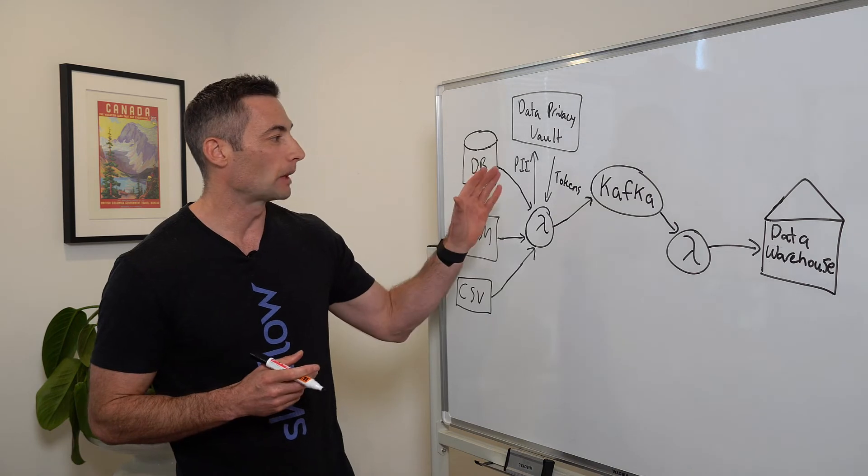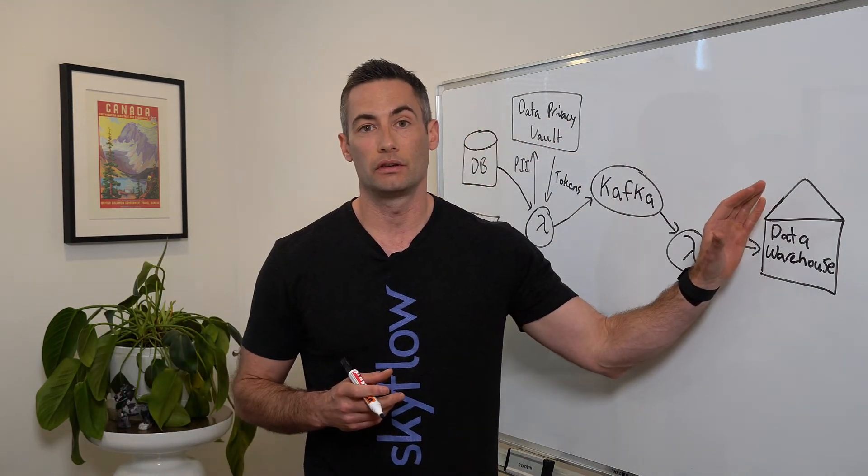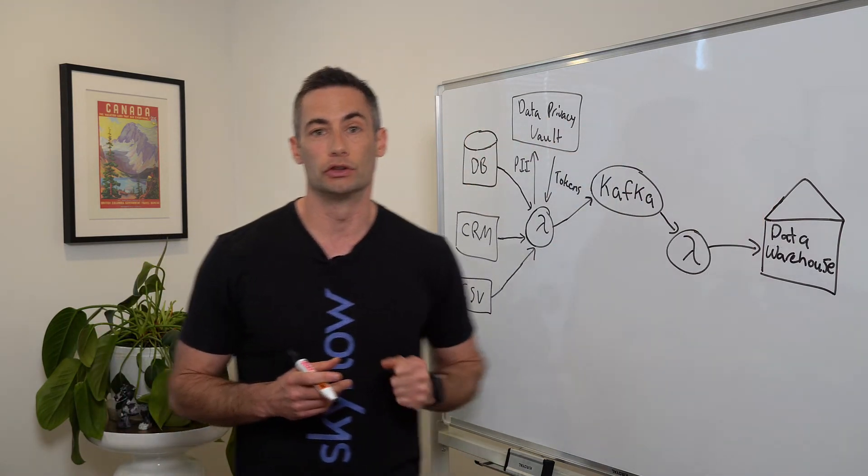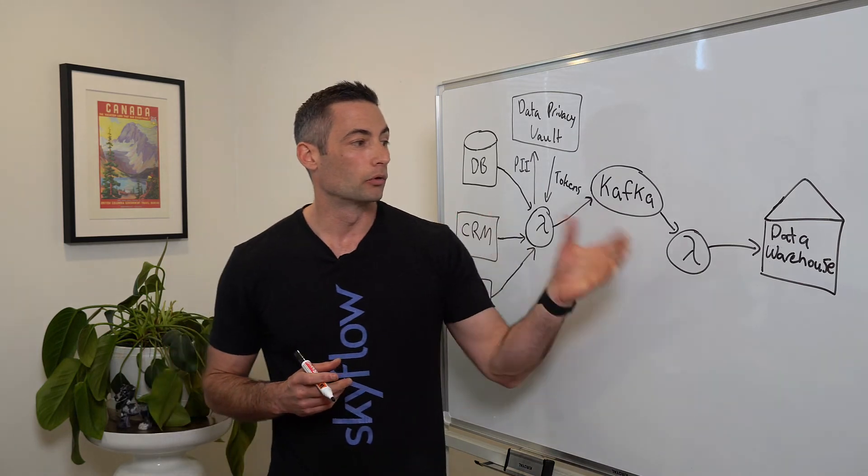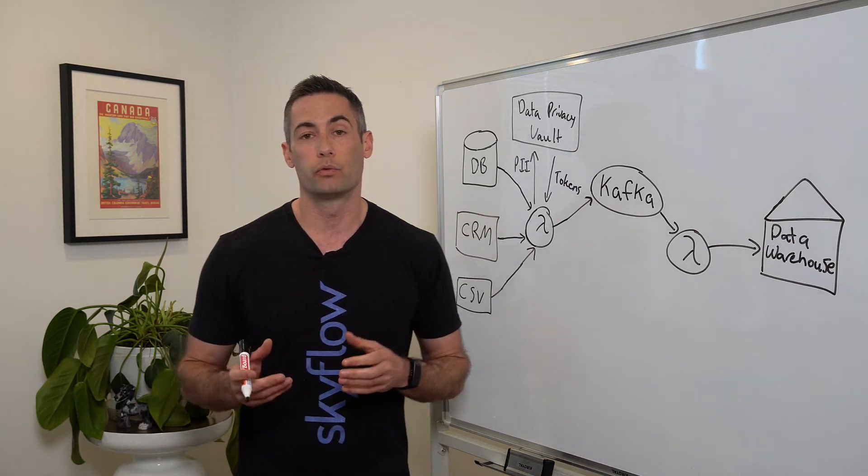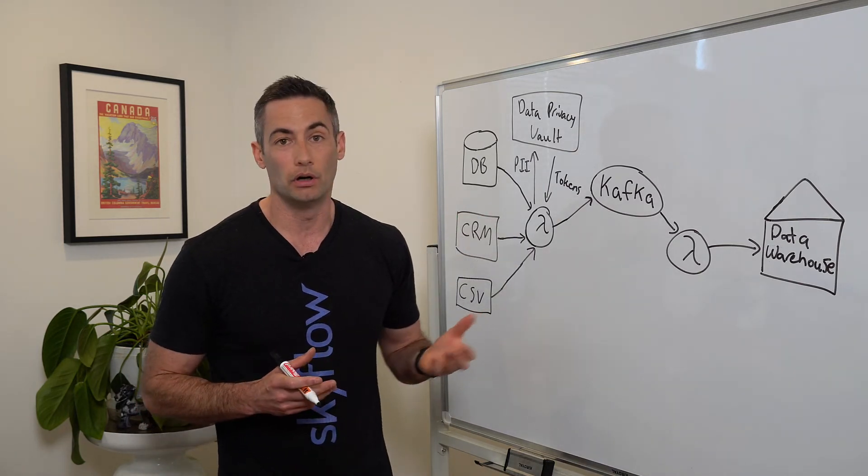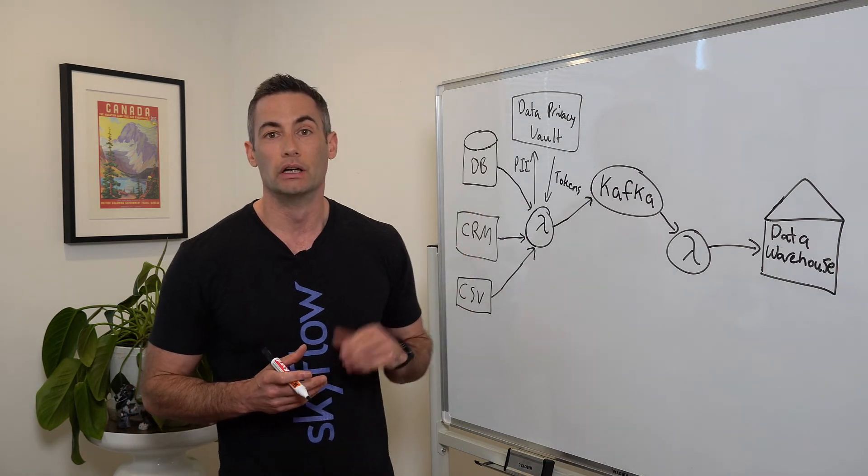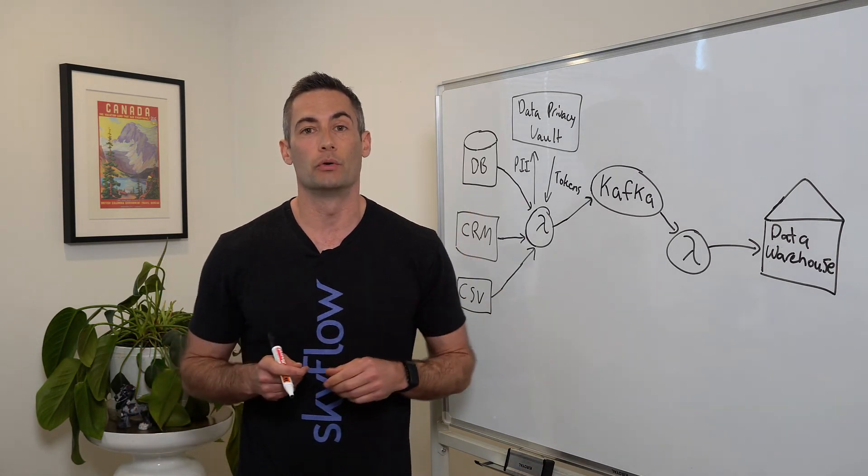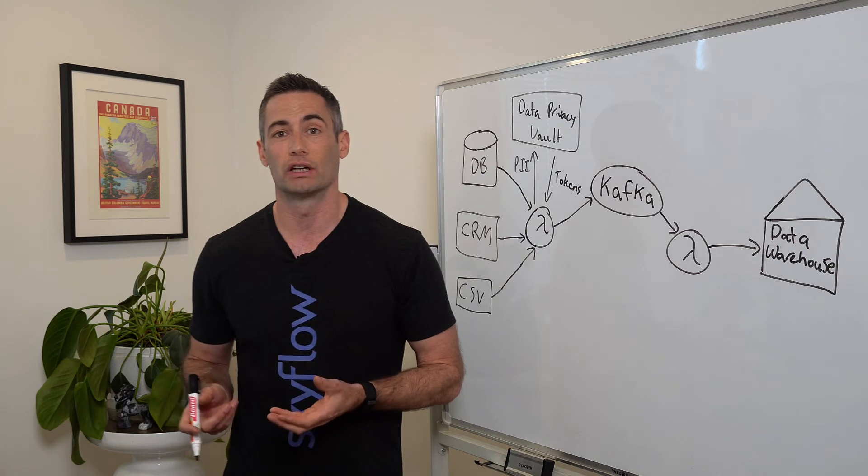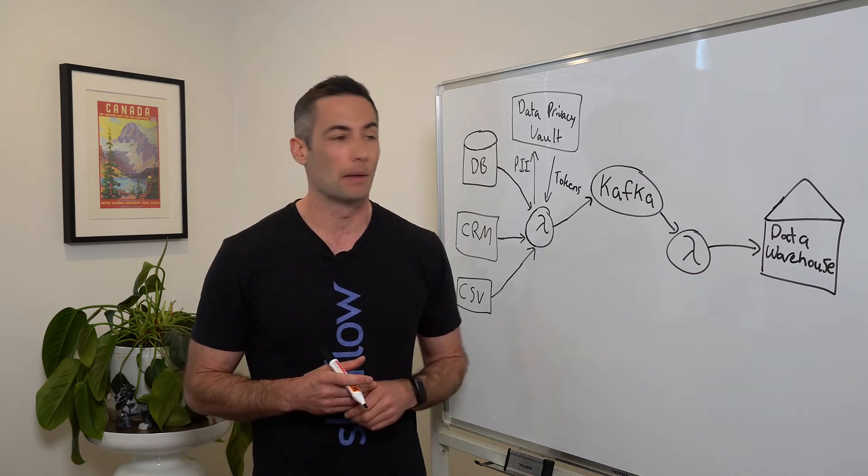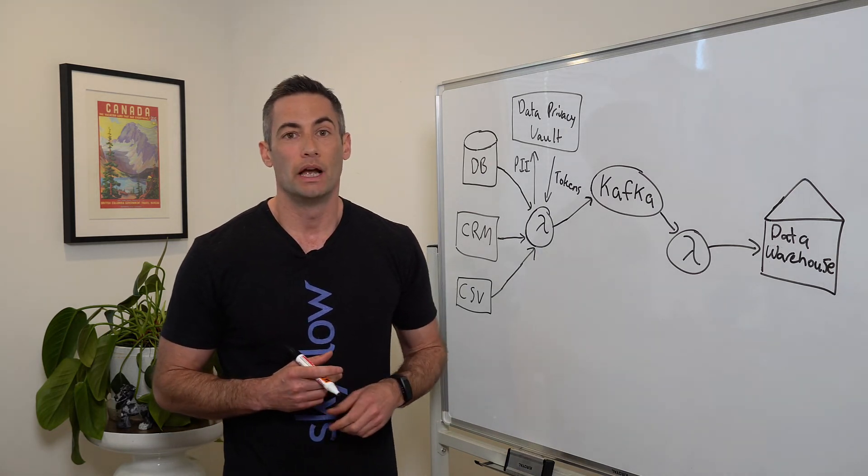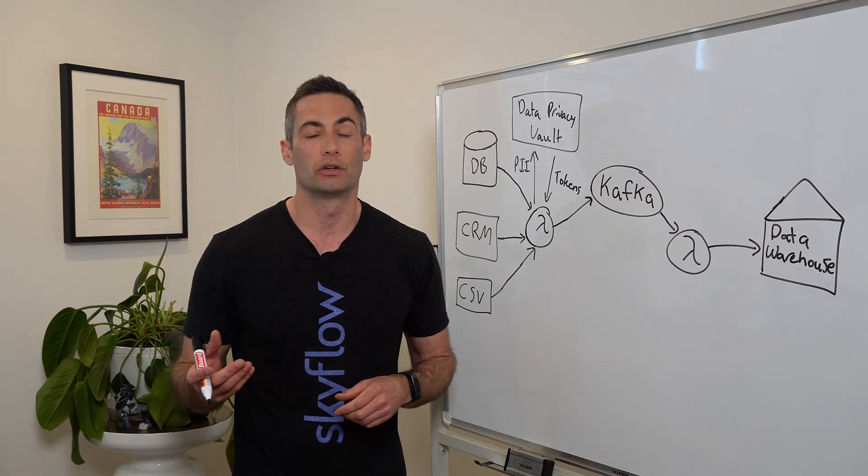So the first step here is let's replace the sensitive data with tokenized versions of that data. And for columns that require certain formats, like a phone number, we can use format-preserving tokenization where the original phone number gets swapped out for something that still looks like a phone number but doesn't actually map to the initial user.